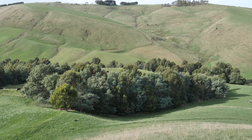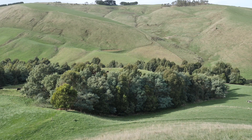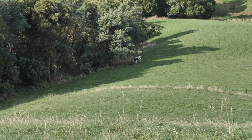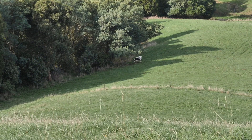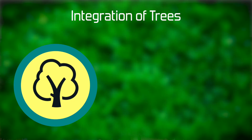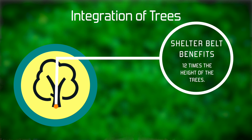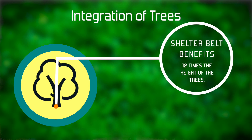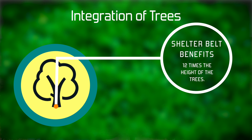Shelter belts are really significant in a landscape like this for a number of reasons. They provide physical protection to stock and benefits to pastures and crops growing in the lee of the shelter belt. The extent of the benefit from shelter belts is approximately 12 times the height of the tree, so it extends out considerable distances from the shelter belt itself.